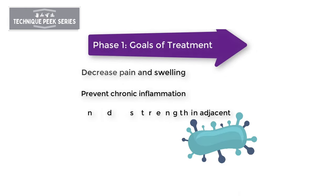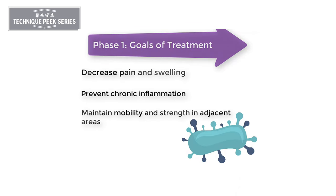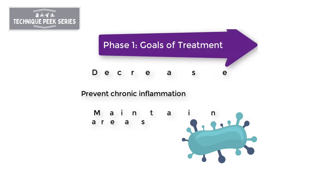The goals of treatment during Phase 1 are to decrease the pain and swelling, prevent chronic inflammation, and maintain mobility of surrounding joints.